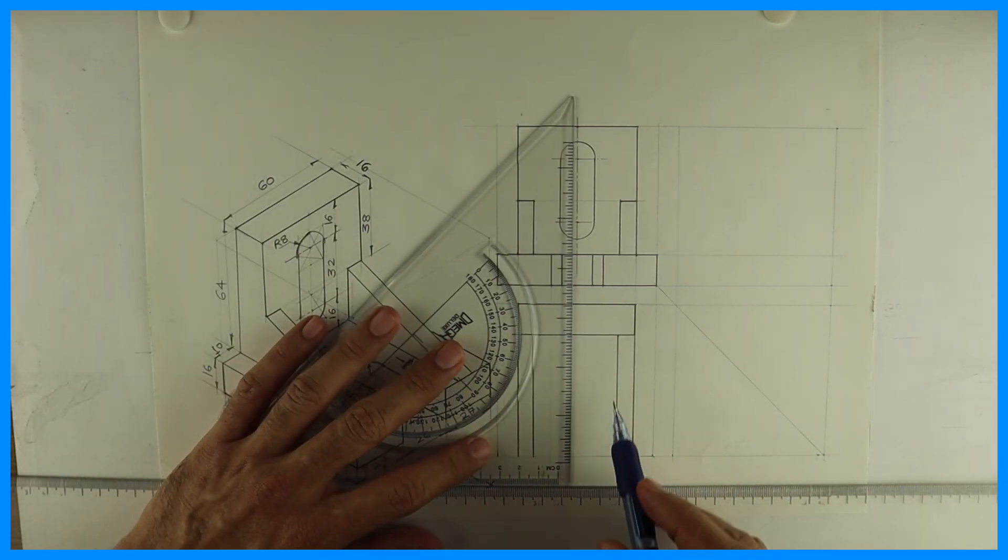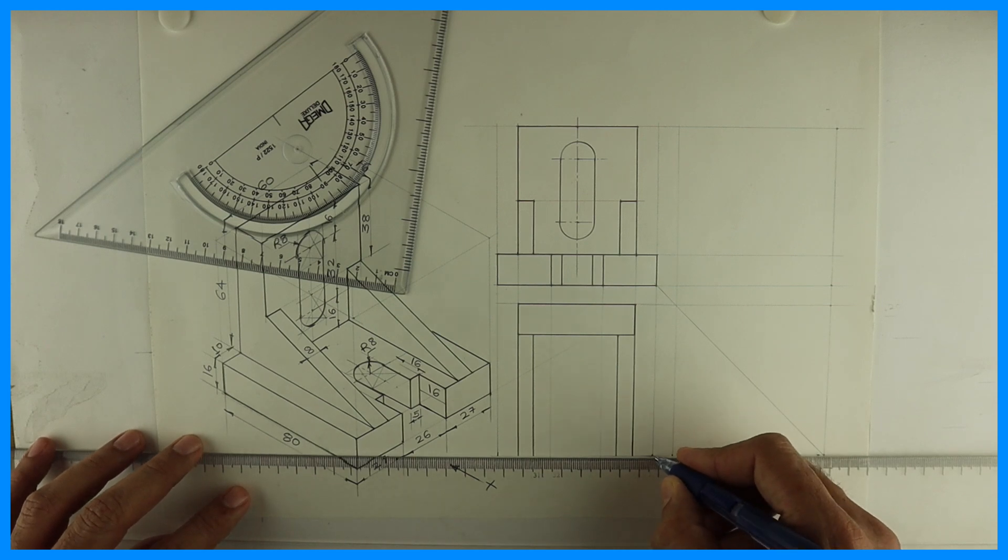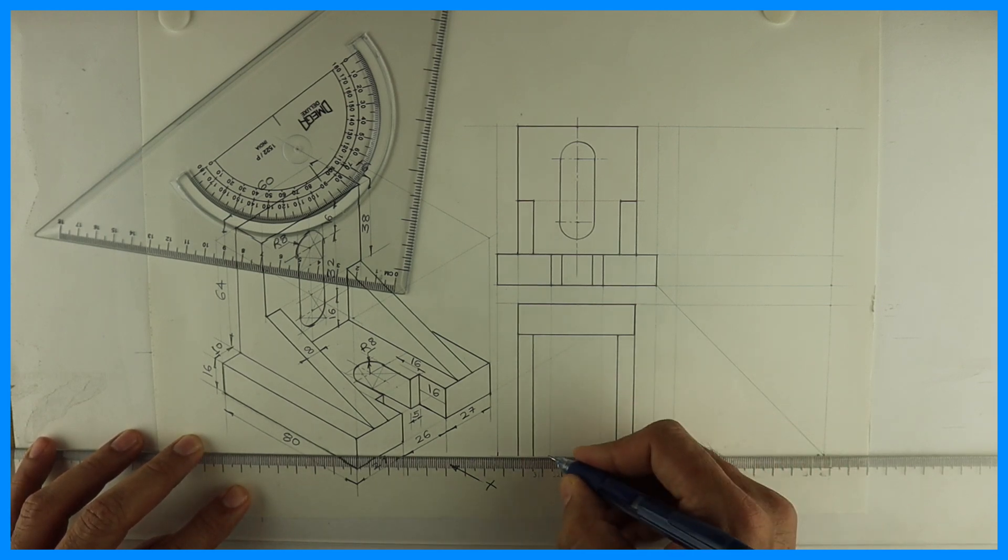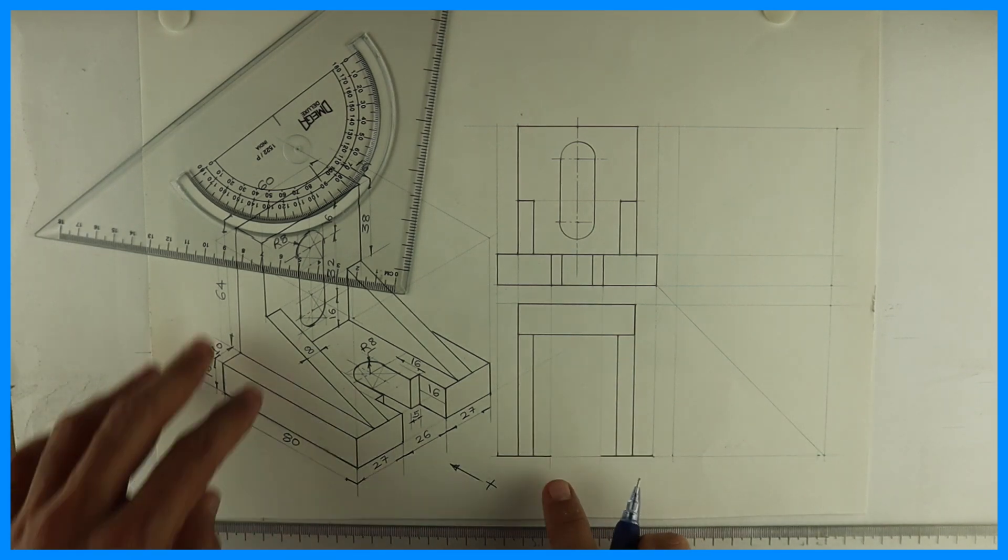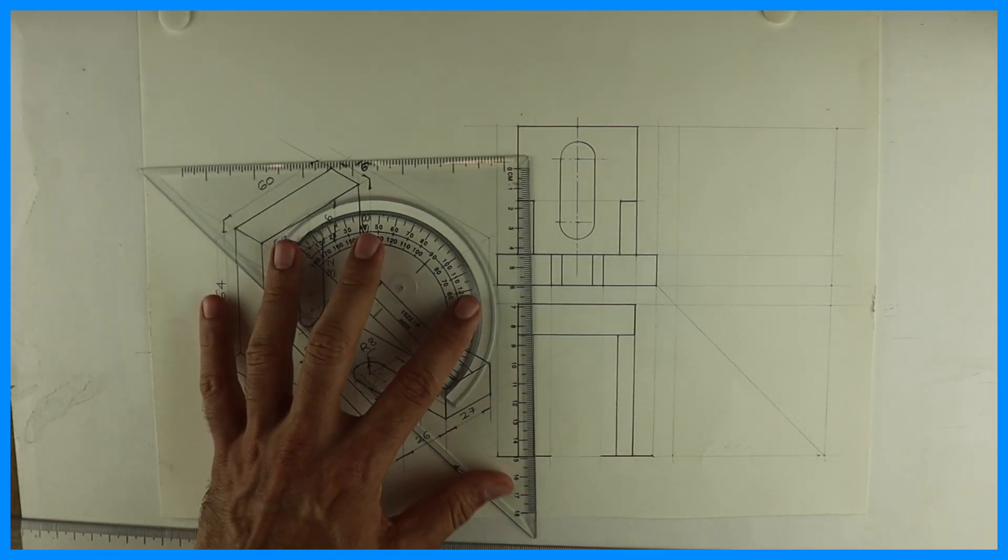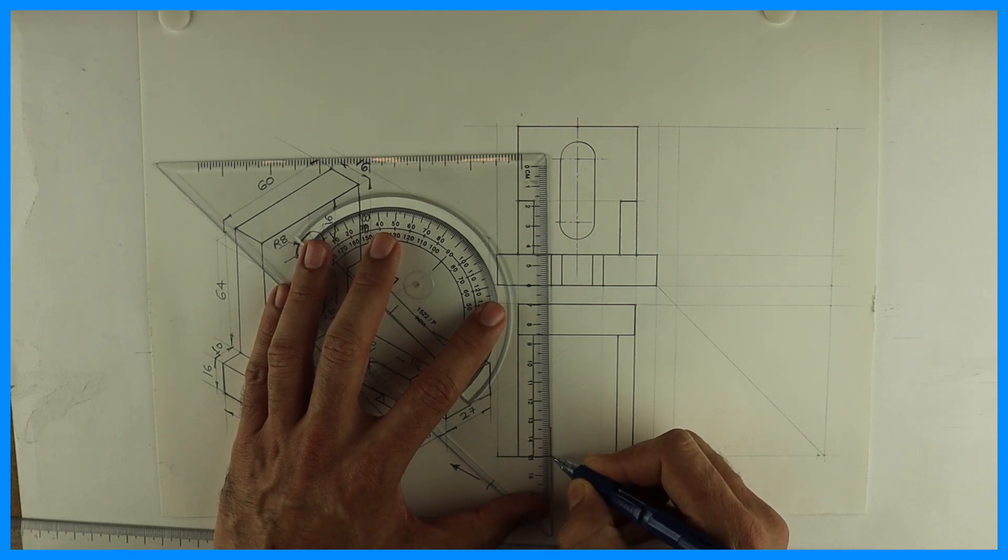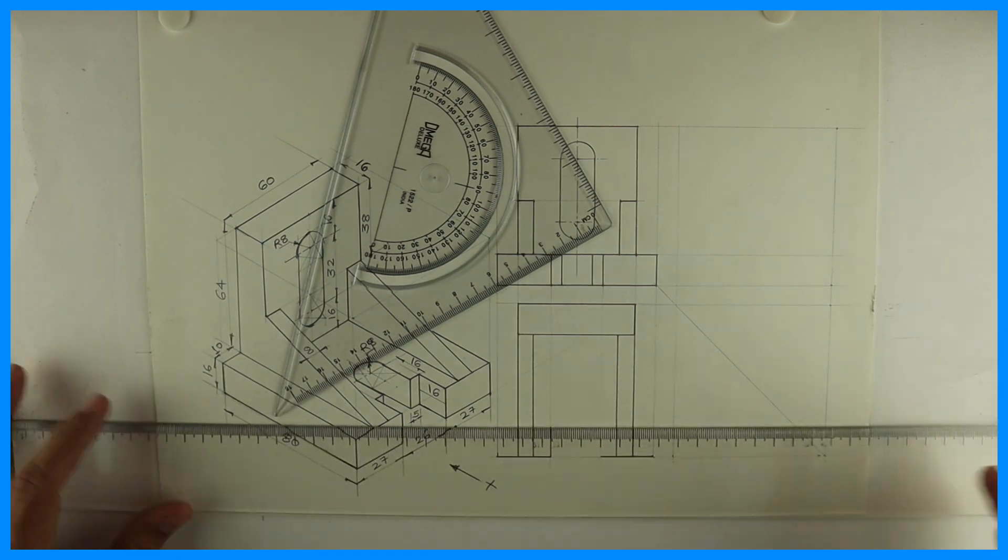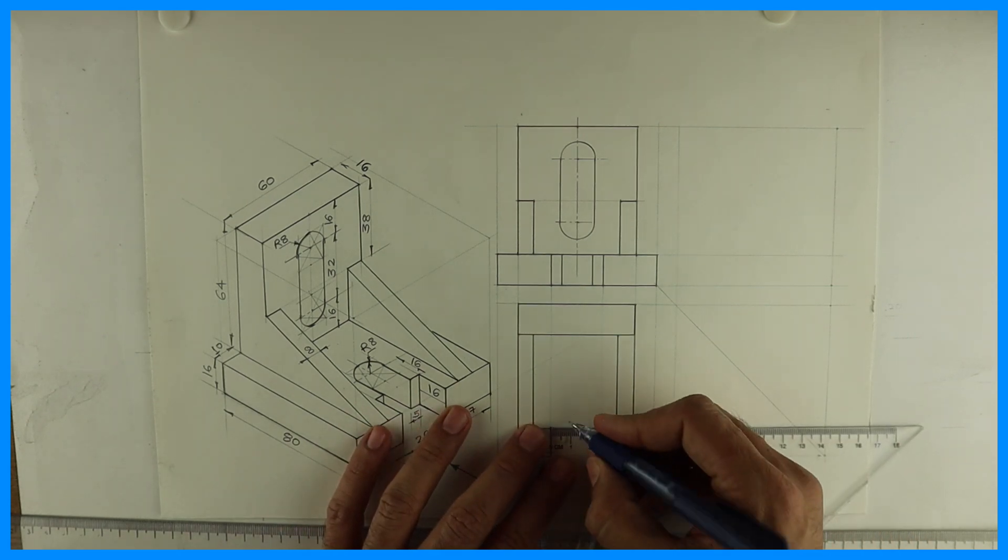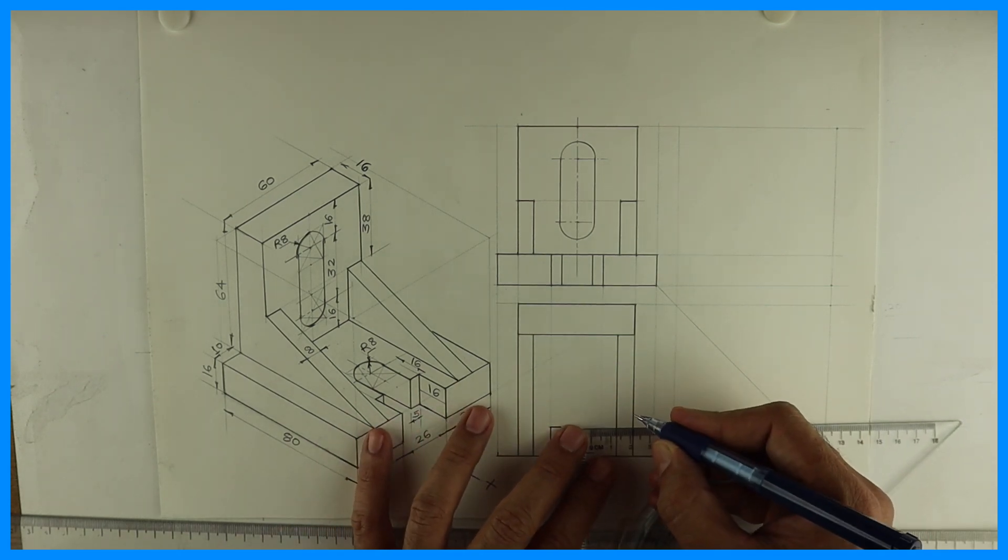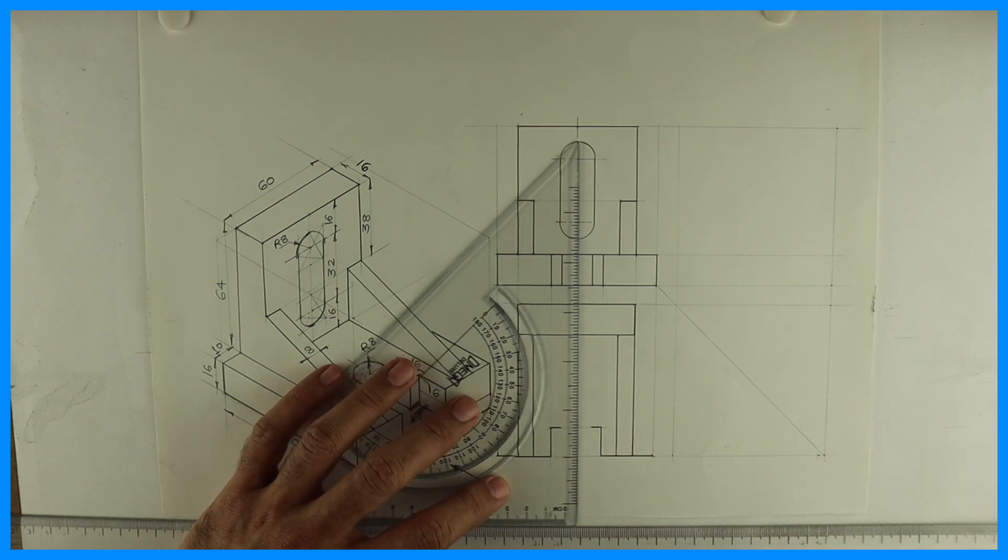See, let me project all these lines also which we required. See, this much is dark, this much is dark. The entire portion is not dark. Now you have to go inside by 16. Then you take 5mm on both the sides. Then again you have to take 16.